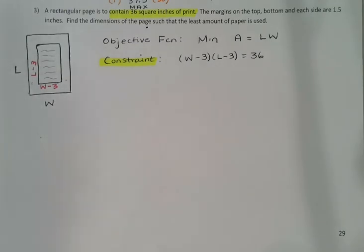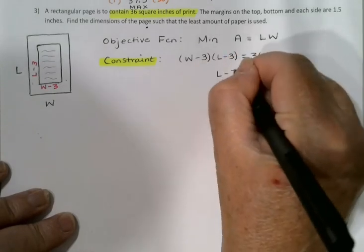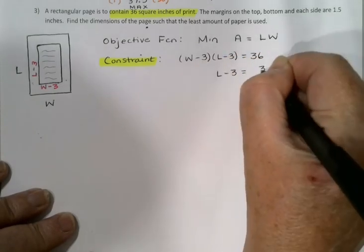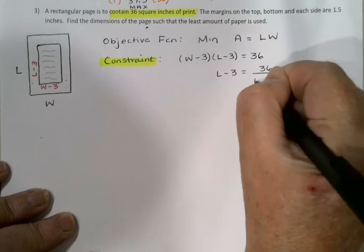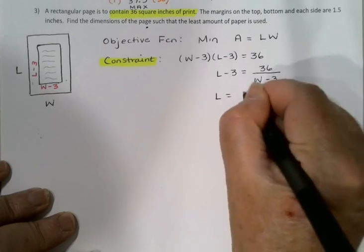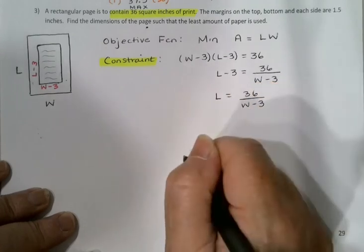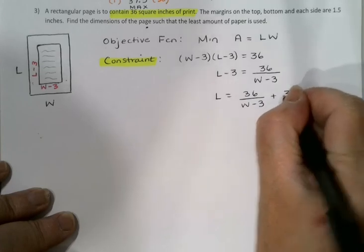Once again I need to solve for either W or L, it doesn't matter which. We've been consistently solving for L, so let's keep it up. I could divide to say that L - 3 = 36/(W - 3), and so L = 36/(W - 3) + 3.